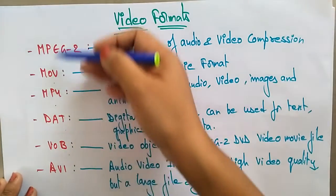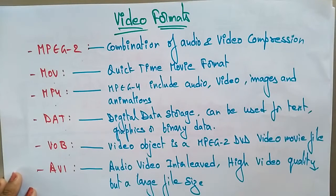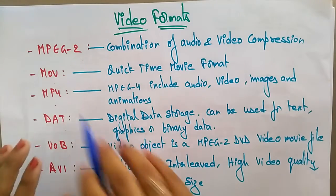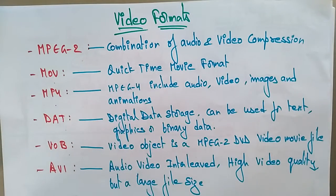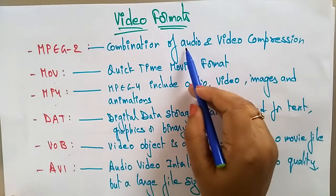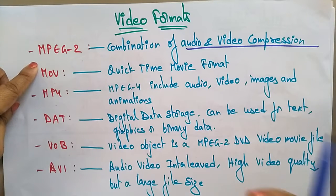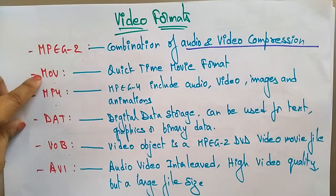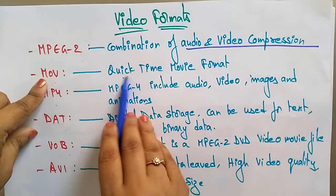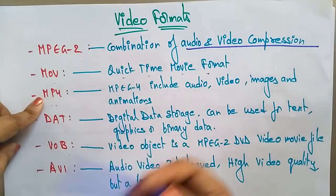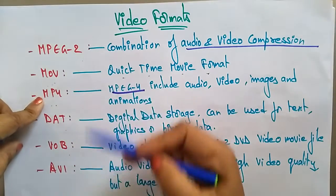So what exactly are these video formats? MPEG2 is a combination of audio and video compression. MOV is nothing but a QuickTime movie format. MP4 is also called MPEG4 — it is the next version of MPEG2. Whereas MPEG2 is only a combination of audio and video compression, MPEG4 includes audio, video, images, and animations also. So the extended version supports images and animations as well.